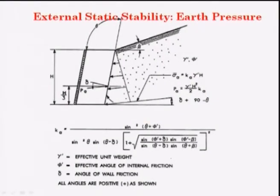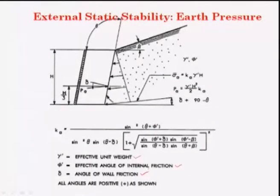Here φ' is the effective angle of internal friction, γ' is the effective unit weight, and δ is the angle of wall friction — the angle between the wall and the soil. All angles are positive as shown: if inclined in the direction indicated, the angle is positive.